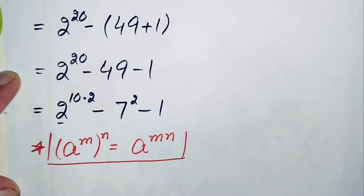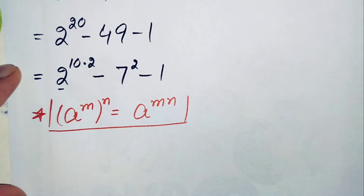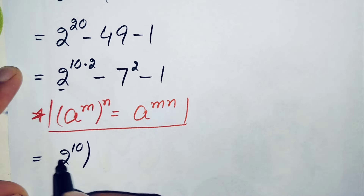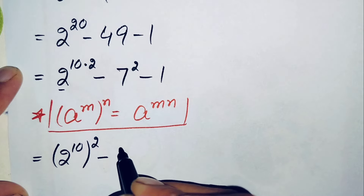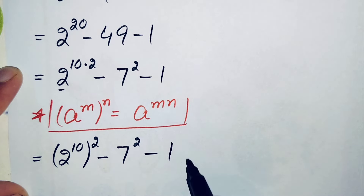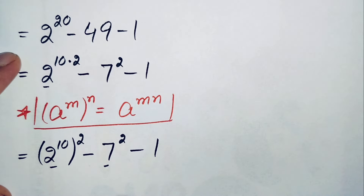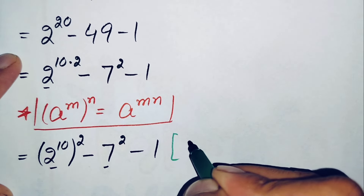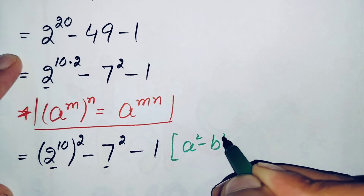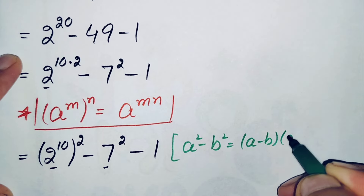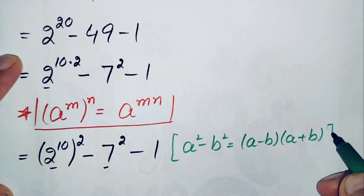So we now have 2 raised to power 10, whole squared, minus 7 squared, minus 1. In the first two terms we will use the algebraic identity a squared minus b squared.